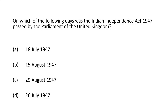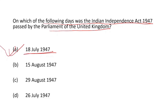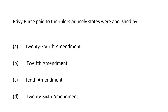On which day was the Indian Independence Act 1947 passed by the Parliament of the United Kingdom? It was on 18th July 1947. The private purse paid to the rulers of princely states was abolished by the 26th Amendment.